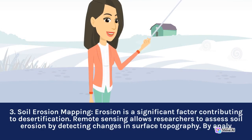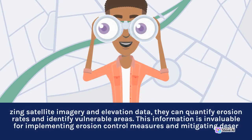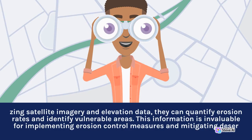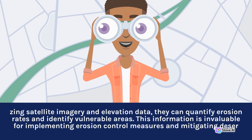3. Soil Erosion Mapping: Erosion is a significant factor contributing to desertification. Remote sensing allows researchers to assess soil erosion by detecting changes in surface topography. By analyzing satellite imagery and elevation data, they can quantify erosion rates and identify vulnerable areas. This information is invaluable for implementing erosion control measures and mitigating desertification.